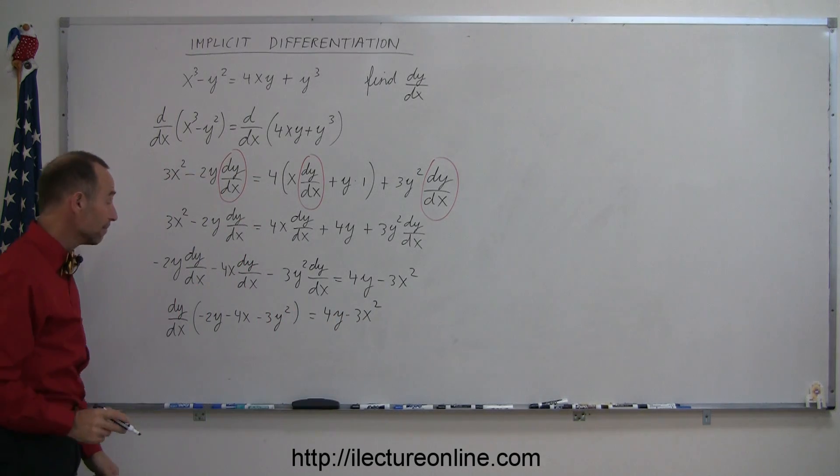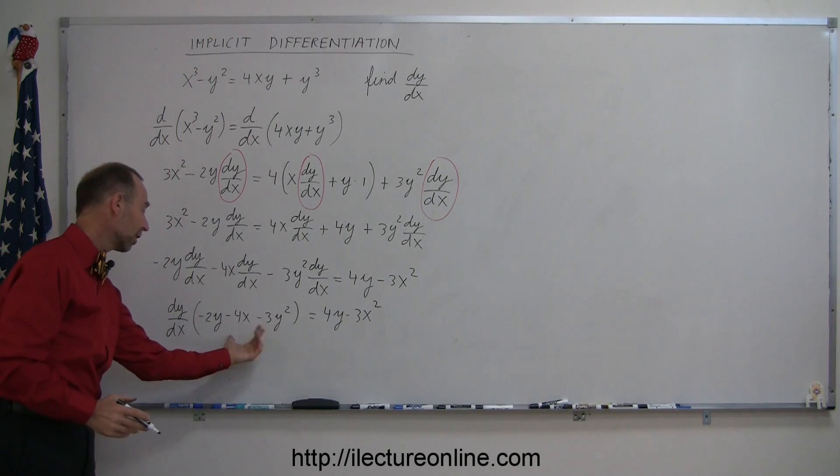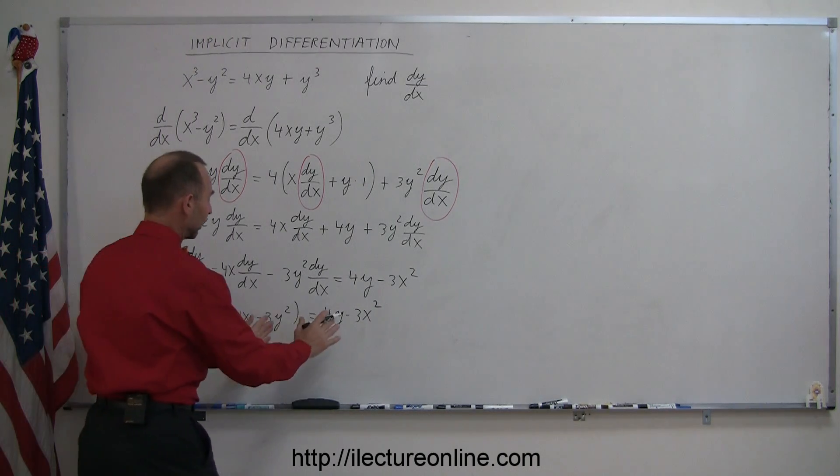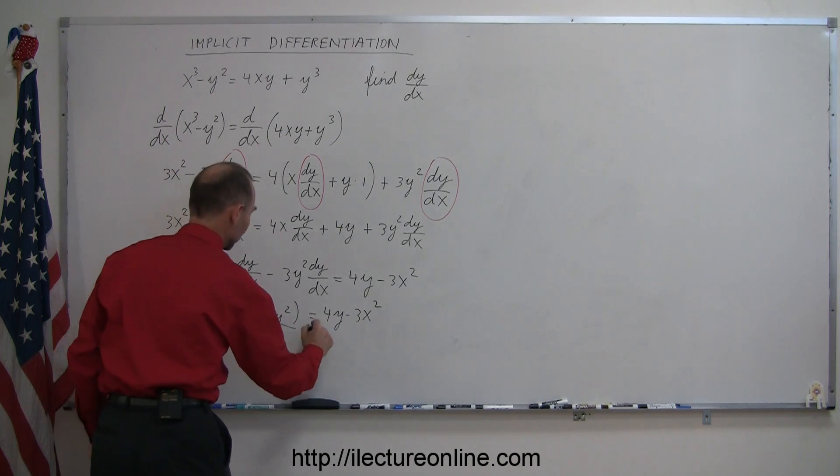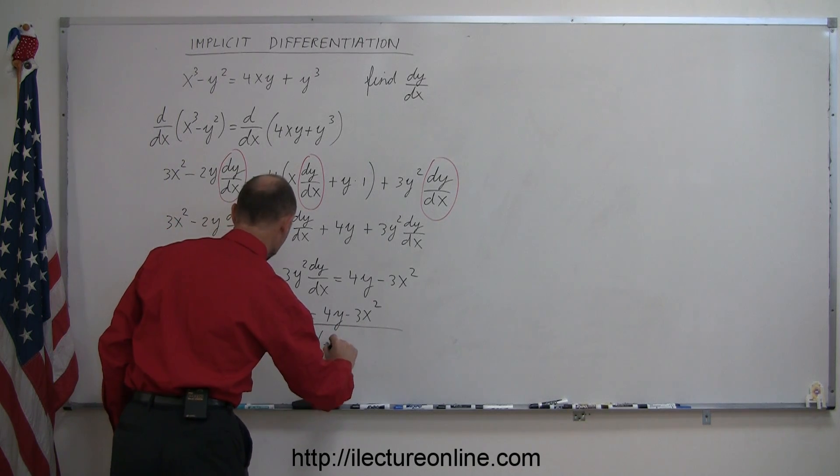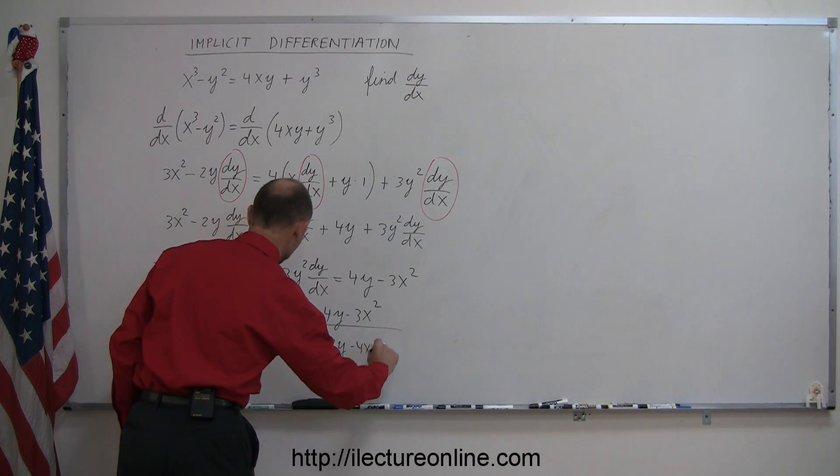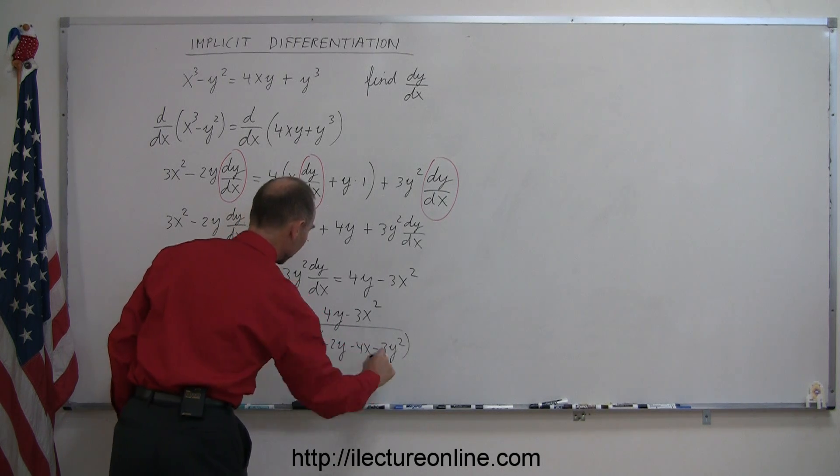And then finally, I can divide both sides of the equation by what's inside the parentheses here. When I do that, I essentially take this and divide that into the right side over there. So this becomes minus 2y minus 4x minus 3y² like so.